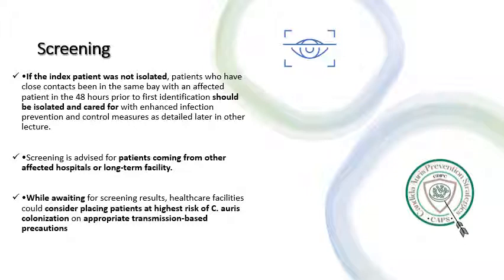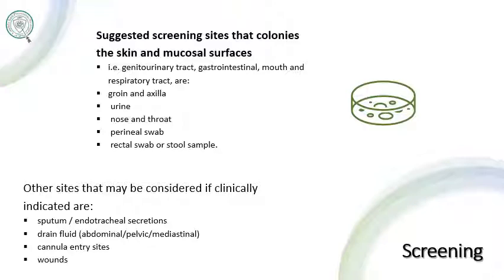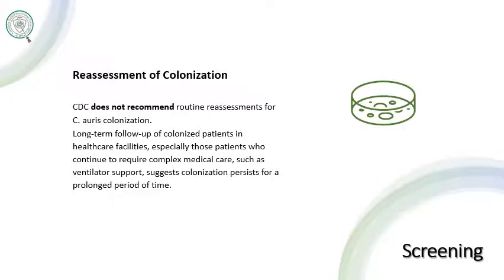Screening is also advised for patients coming from other affected hospitals or long-term facilities. While waiting for screening results, the healthcare facility could consider placing high-risk patients on appropriate transmission-based precautions. Suggested screening sites include groin and axilla, urine, nose and throat, perineal swab, and rectal swab or stool sample — sites that colonize the skin and mucosal surfaces such as the genitourinary tract, gastrointestinal tract, mouth, and respiratory tract. Other sites that may be considered if clinically indicated are sputum or endotracheal secretions, drained fluid from abdominal, pelvic, or mediastinal areas, and cannula entry sites or wounds.